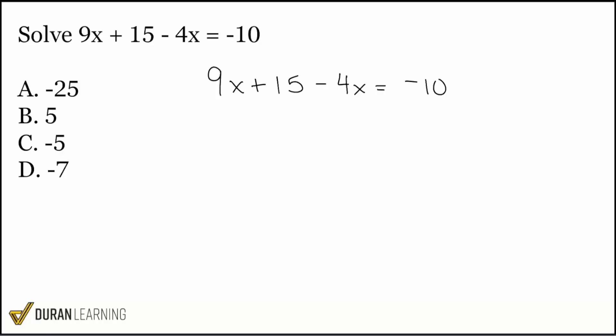The right way to go is actually just combining like terms because we have 9x and minus 4x. If we have 9 of something minus 4 of that same something, what's 9 minus 4? That's going to end up at 5, so we have 9x minus 4x gives us 5x.